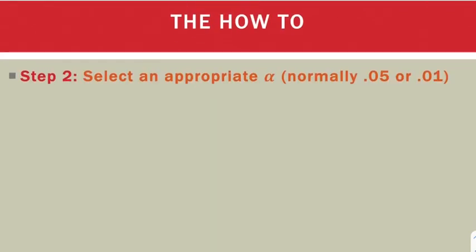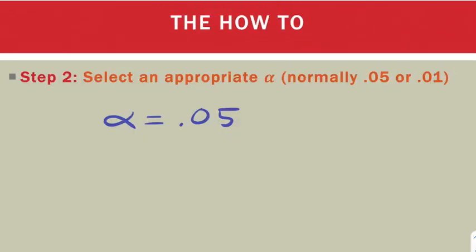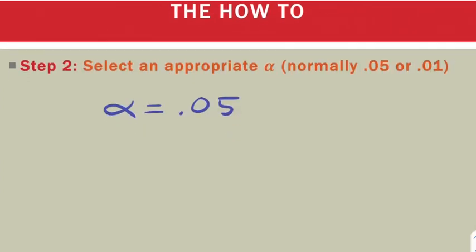Step two is to select our significance level, or our alpha. Well, that's easy for this problem because they told us it's 0.05. So now we have that, we're ready to move on to step three.